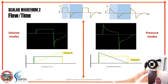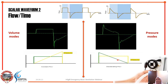Now let's go to the second waveform: the flow against time curve. There are two commonly used flow patterns. The first is the square or constant flow pattern, typically seen in volume mode where flow is constant while pressure rises. The second is the decelerating or ramp-type pattern, usually seen in pressure mode where flow reduces as pressure is maintained constant.